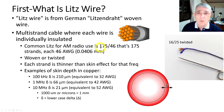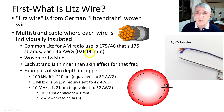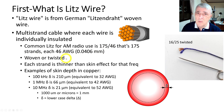The most common type I can find is something called 175/46. That means there are 175 strands, and each one is 46 wire gauge, which is 0.0406 millimeters. If that sounds small, you're right — it's really small. The wire is woven or twisted, and each strand is thinner than the skin depth for its target frequency.